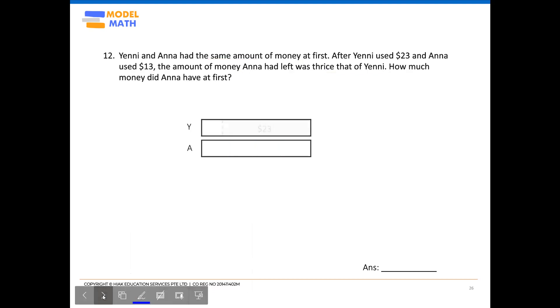So your model should look like this, where it is clear that the unshaded part of the model for Anna is three times that of Yeni as stated by the question.